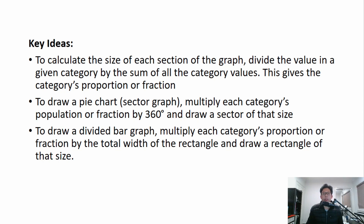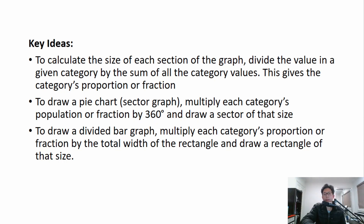Now that we know how to read and interpret a pie chart or bar graph, let's go through the key ideas of how to draw each one. First, calculate the size of each section by dividing the value in a given category by the sum of all category values — this gives the category's proportion or fraction. For a pie chart, multiply each category's proportion by 360 degrees and draw a sector of that size, since 360 degrees is the total in a circle. For a divided bar graph, multiply each category's proportion by the total width of the rectangle and draw a rectangle of that size.